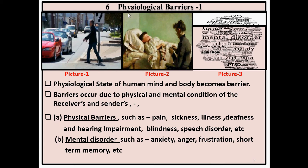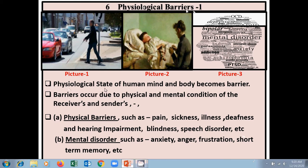What is a physiological barrier? The physiological state of human mind and body becomes a barrier. Barriers occur due to the physical and mental conditions of the receivers and senders — how the physical state and mental state of a receiver or sender plays a role.